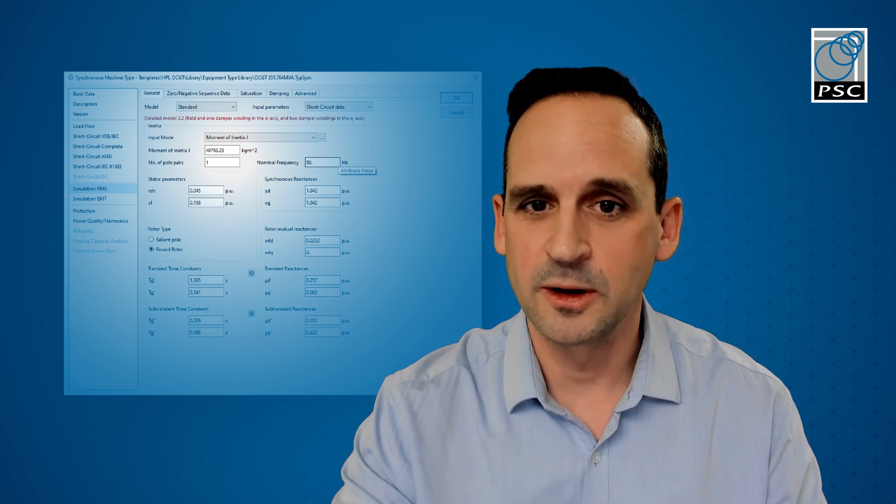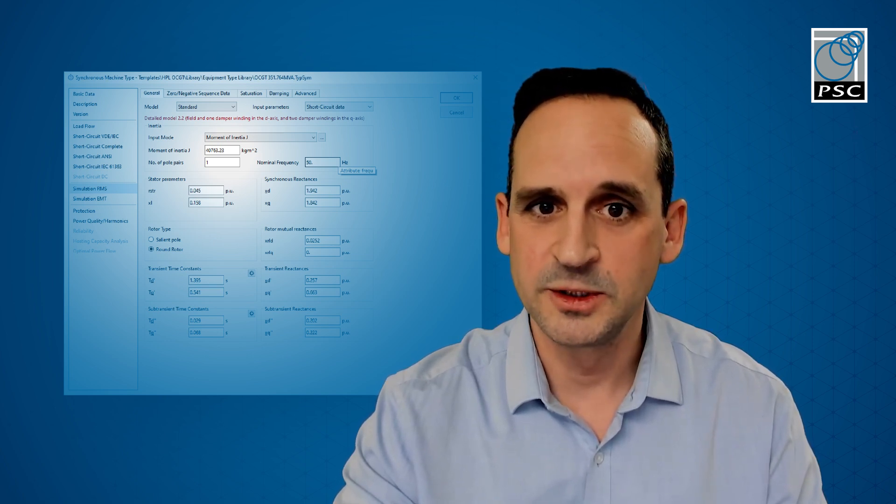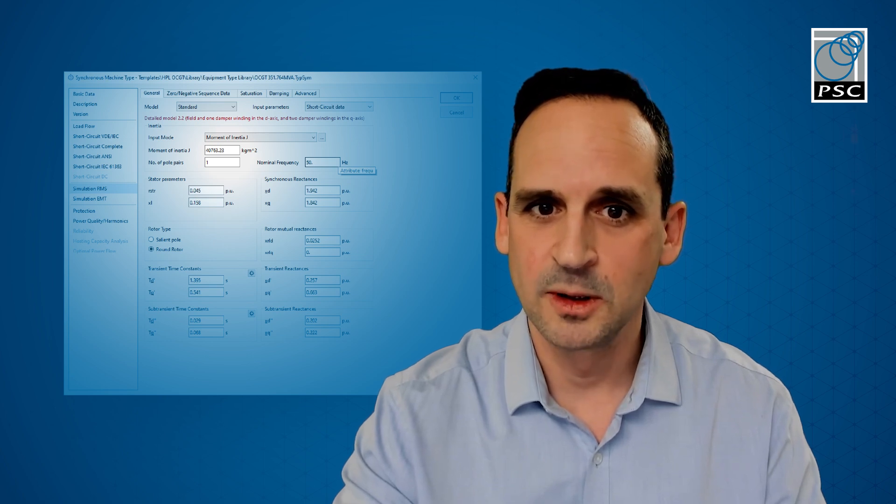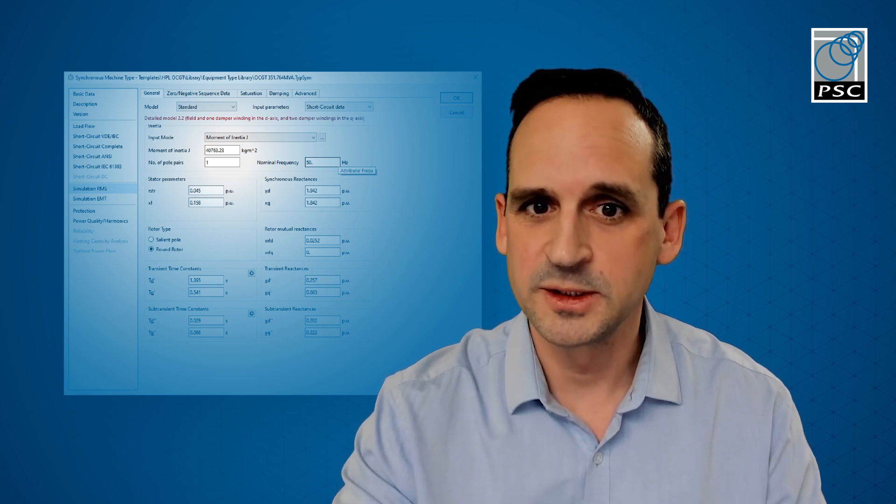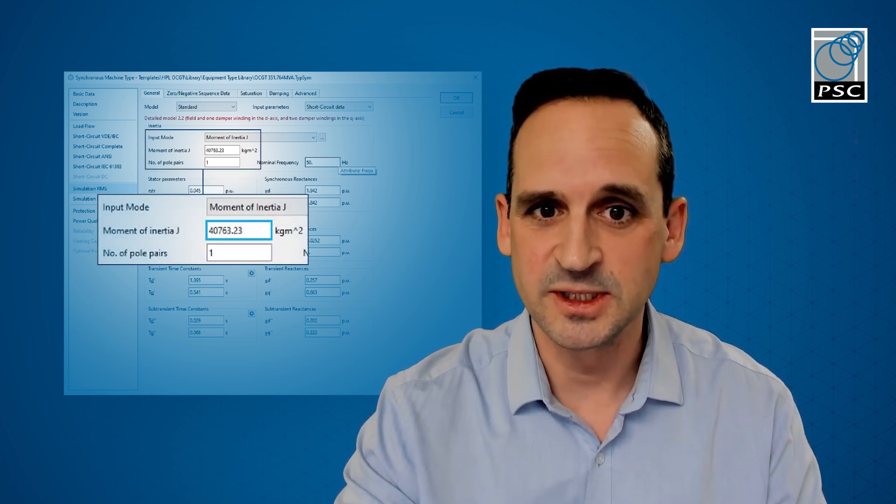This screen represents a lot of the physical electrical characteristics of the machine, which should be provided in the manufacturer's data. Of particular importance for a dynamic study such as fault ride-through is the rotor inertia, as this affects the machine's resistance to acceleration.